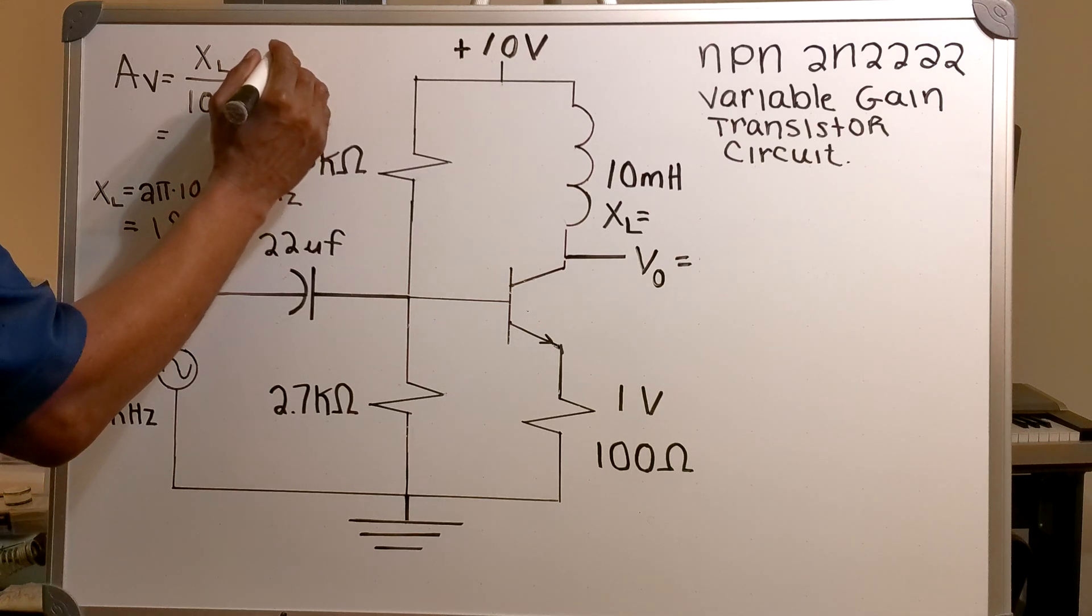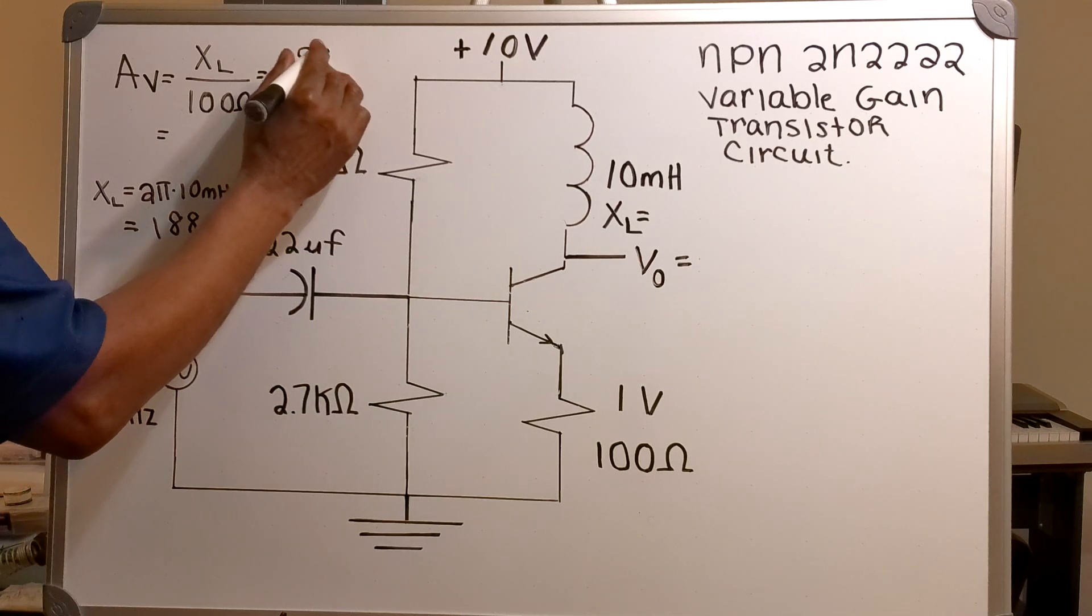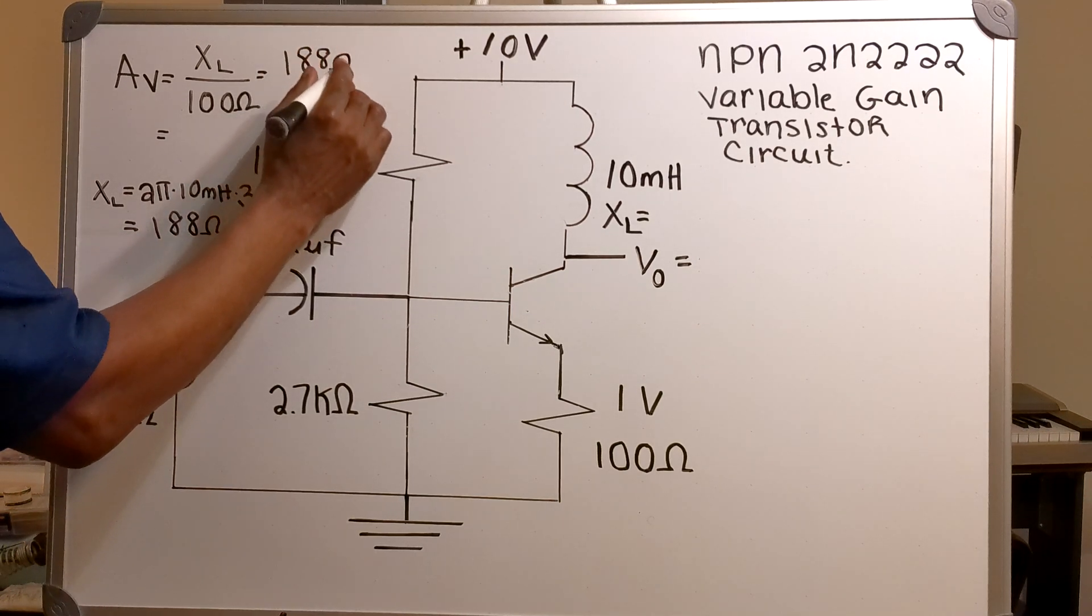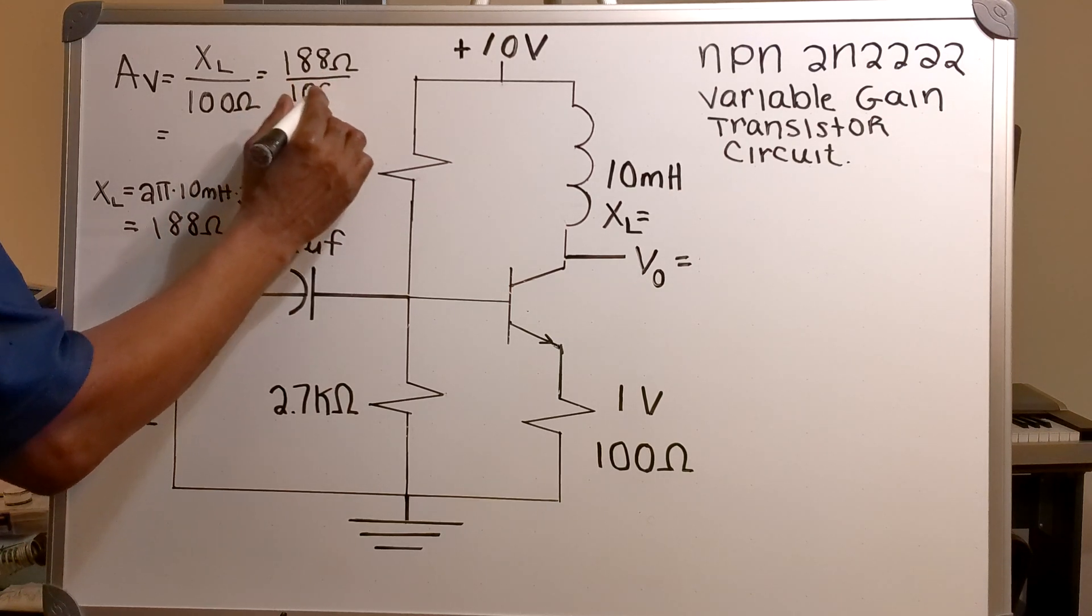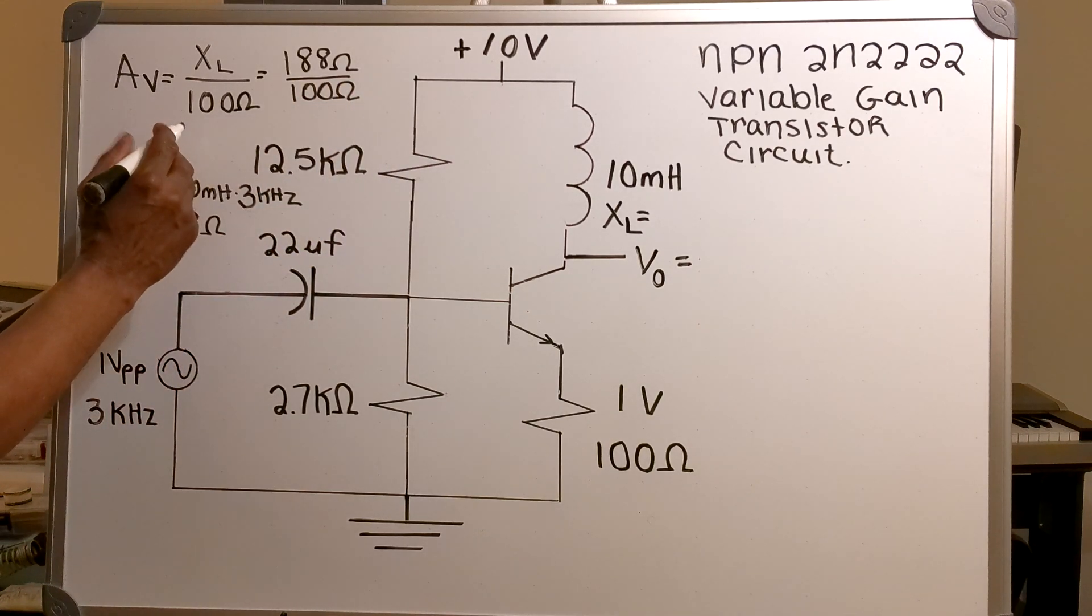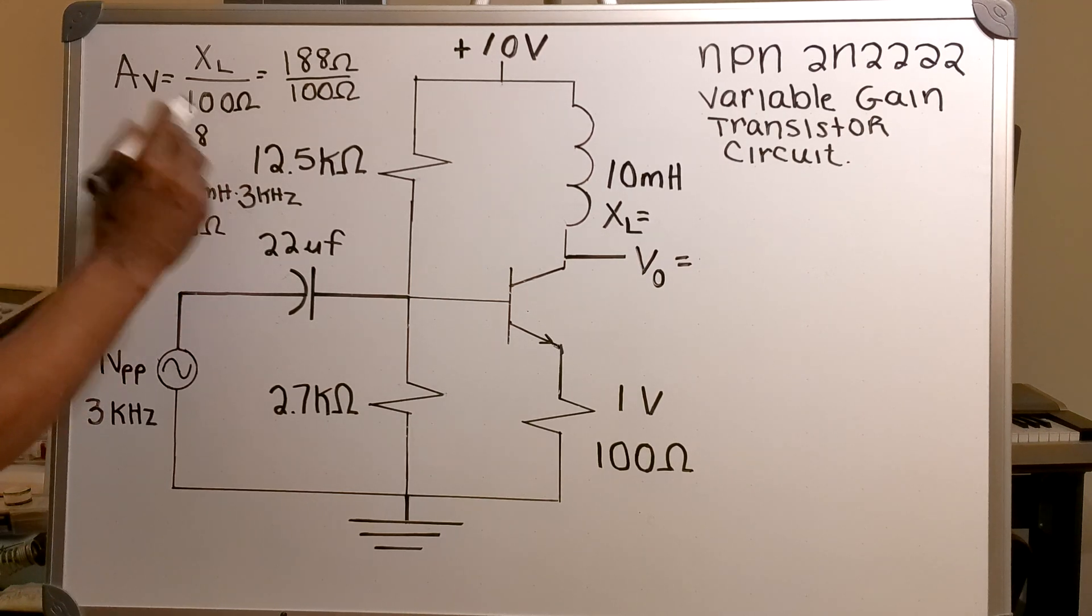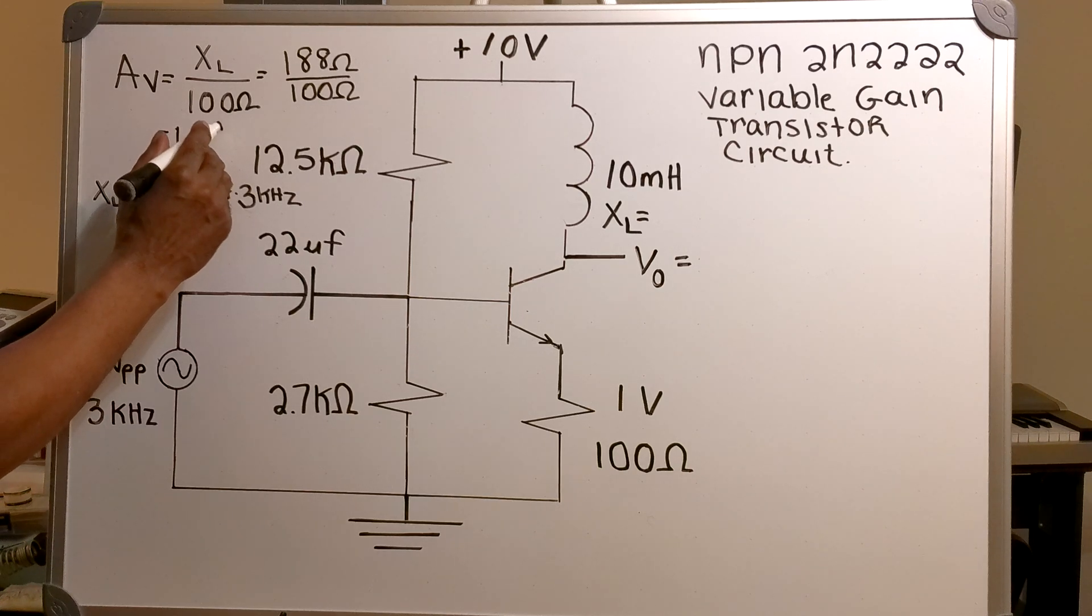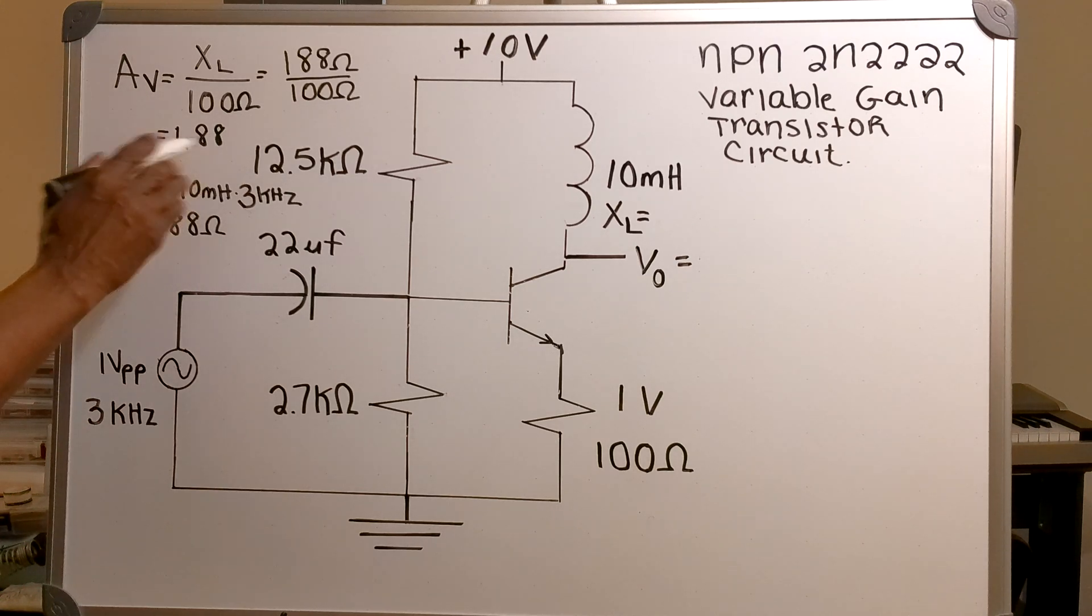So now I have 188 ohms over 100 ohms. And that gives me a voltage gain of 1.88. The gain has no unit, so it's just 1.88.